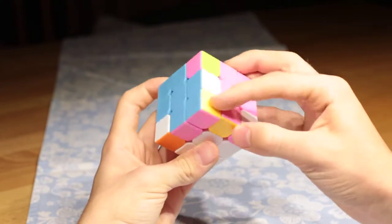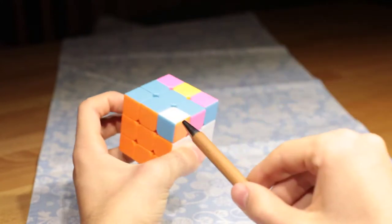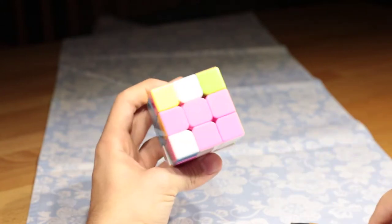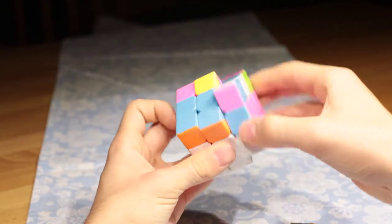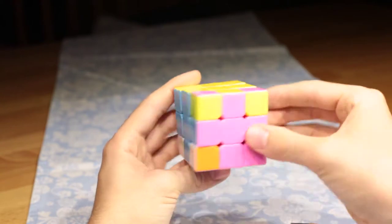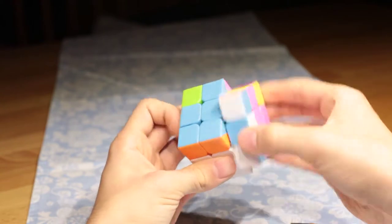When repeated twice, the corners are back in their places, but twisted. When repeated three times, the edges are solved. After six repetitions, everything is like before.